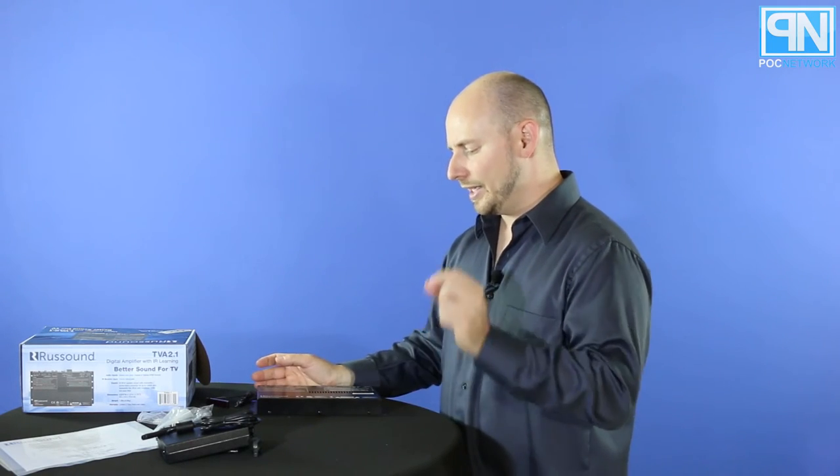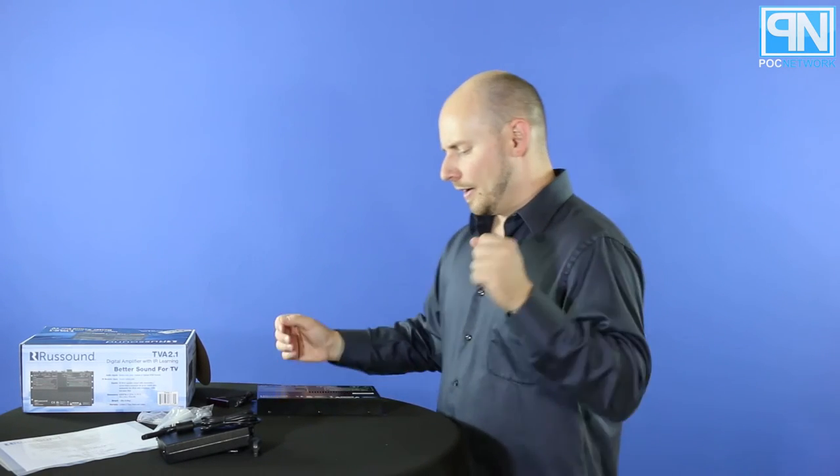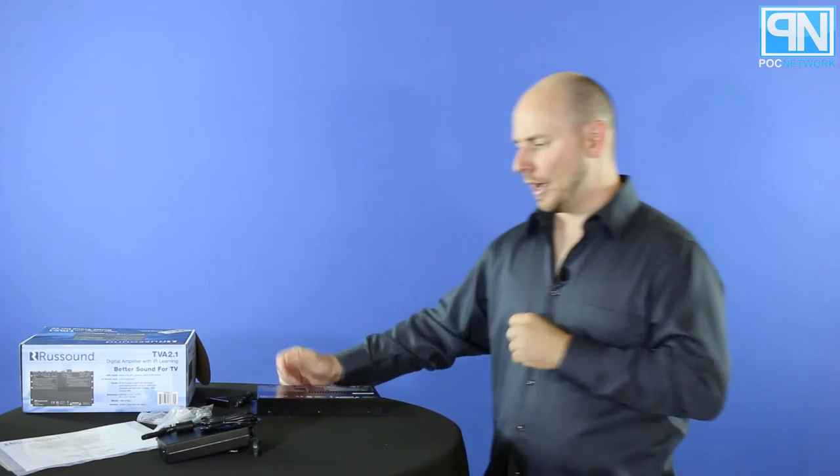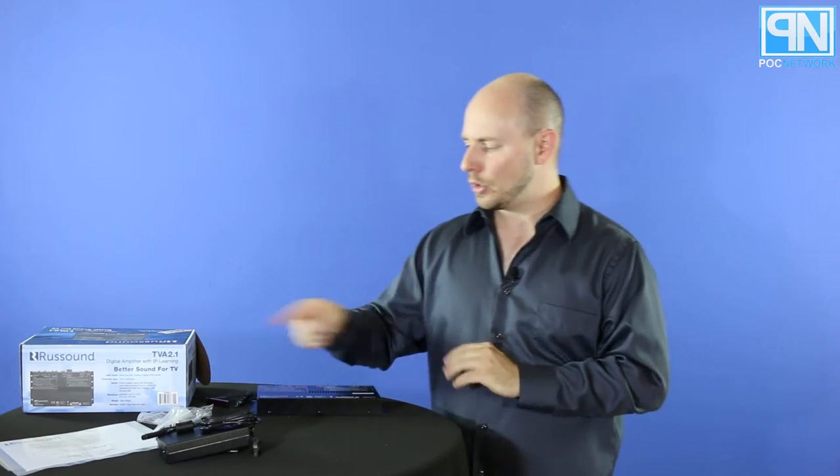So this is the Rust Sound TVA 2.1 digital amplifier. It's Rust Sound, spelled R-U-S-S-O-U-N-D, so you can check them out, Google them, and see what other people are saying. But most importantly, what you want to do is you want to go to our website. It's pocnetwork.net forward slash blog. See what we have to say, because our authors are going to definitely give it a test, and we can't wait to check it out.